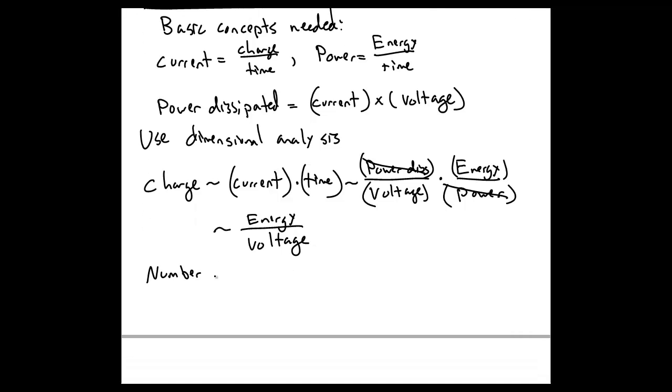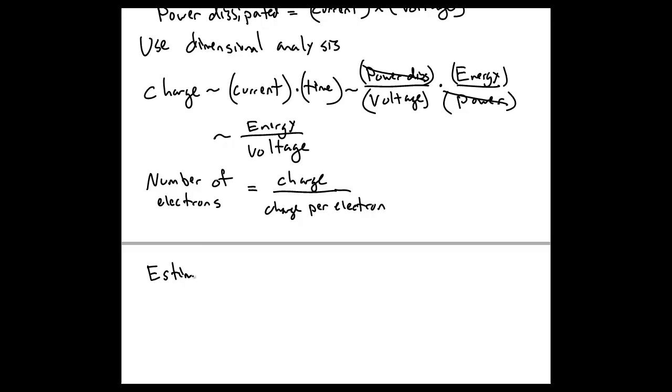The extra step we need is that the number of electrons that pass through the laptop is the charge, the total charge it passes through, divided by the charge per electron. So now that we use dimensional analysis to set up our problem, now we need to make our estimates.